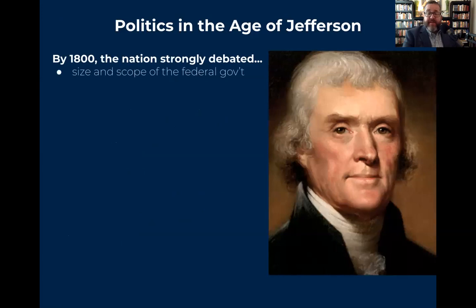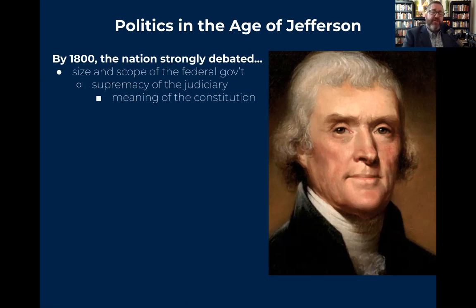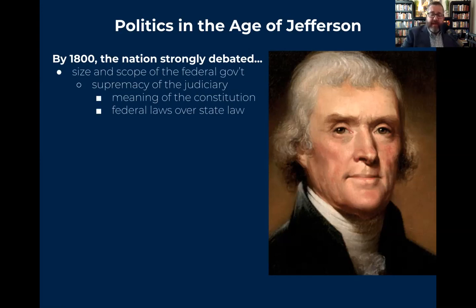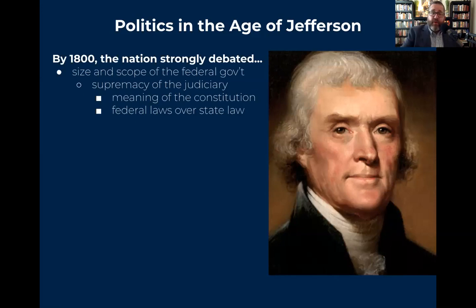By 1800, the nation was strongly debating the size and scope of the federal government, particularly the judiciary. The Supreme Court under John Marshall was looking at the meaning of the Constitution and how federal laws interact with state laws — that component of federalism we discussed in Period 3. What power do the states have over the federal government? Drawing continuity and change over time, even to 2020, we see the role of the federal government debated in the COVID-19 crisis — what are governors responsible for versus the federal government? So even today, that continued and rather heated debate over responsibility persists.